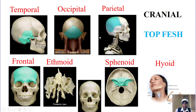Let's practice the names now. TAP FISH: temporal, occipital, parietal, frontal, ethmoid, sphenoid — and we added hyoid. Good job, cranial bones.